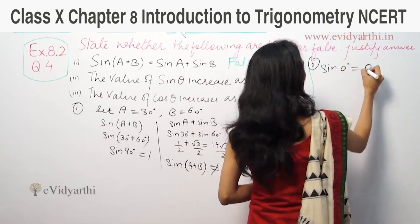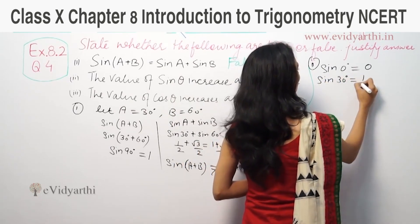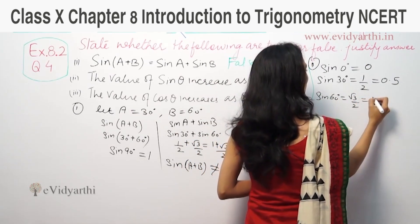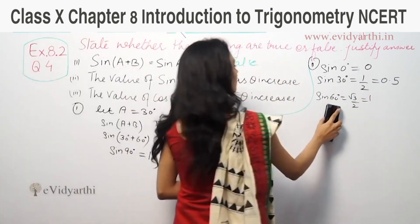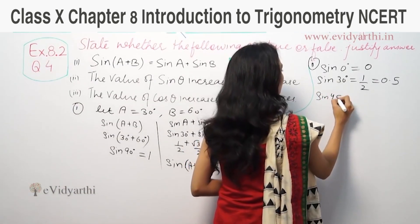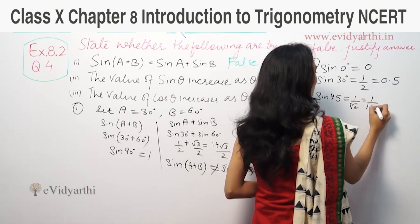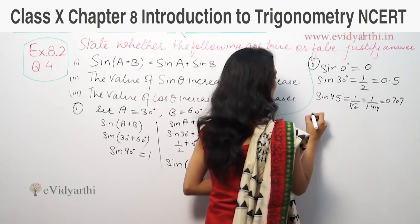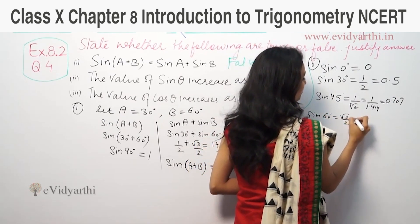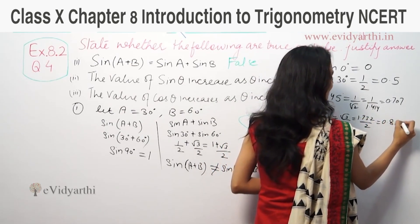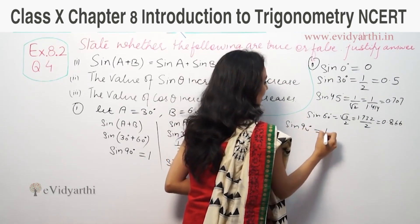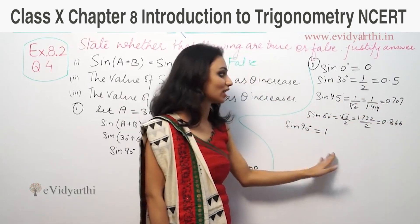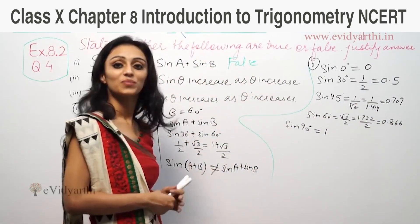Sin 0° has a value of 0. Sin 30° has a value of 1/2, that is 0.5. Sin 45° is 1/√2, that means 1/1.414, so approximately 0.707. Sin 60° is √3/2, that means 1.732/2, which is 0.866. Sin 90° is 1. Starting from 0, then 0.5, then 0.707, then 0.866 — the value is actually increasing. That means sinθ increases as θ increases.